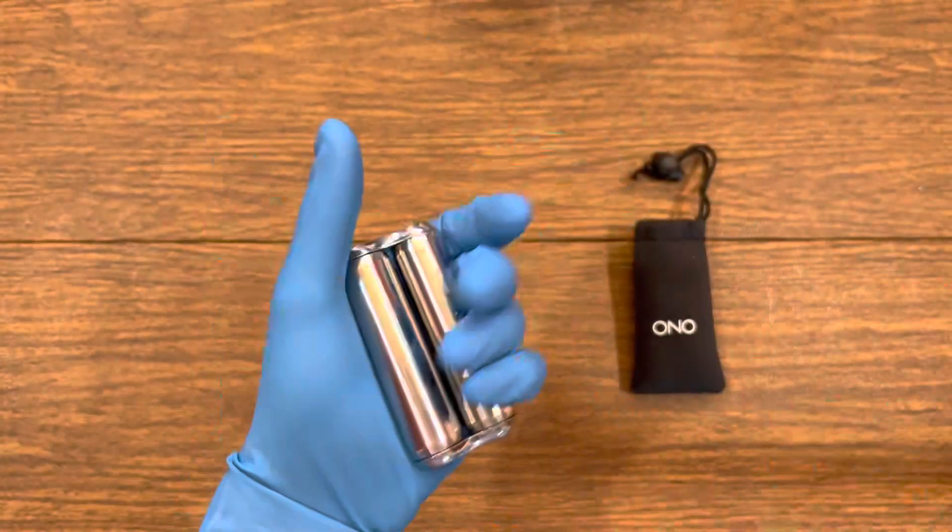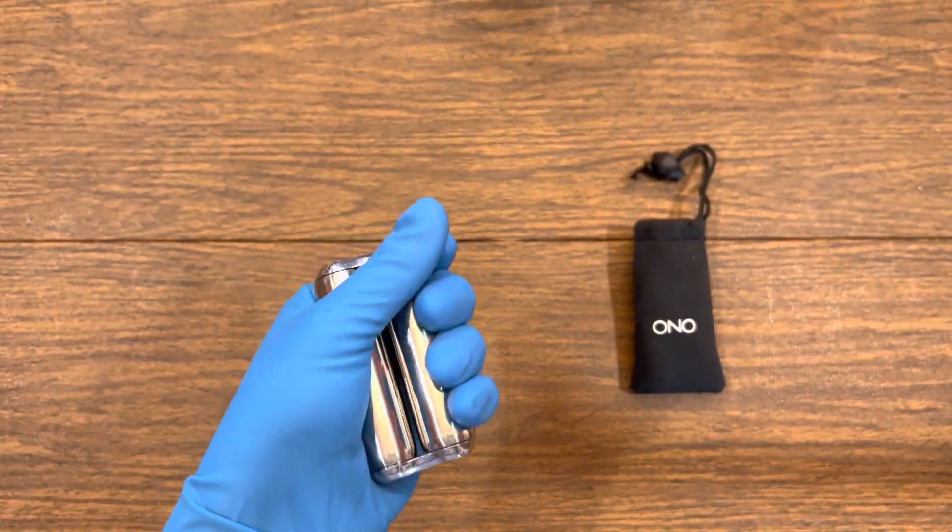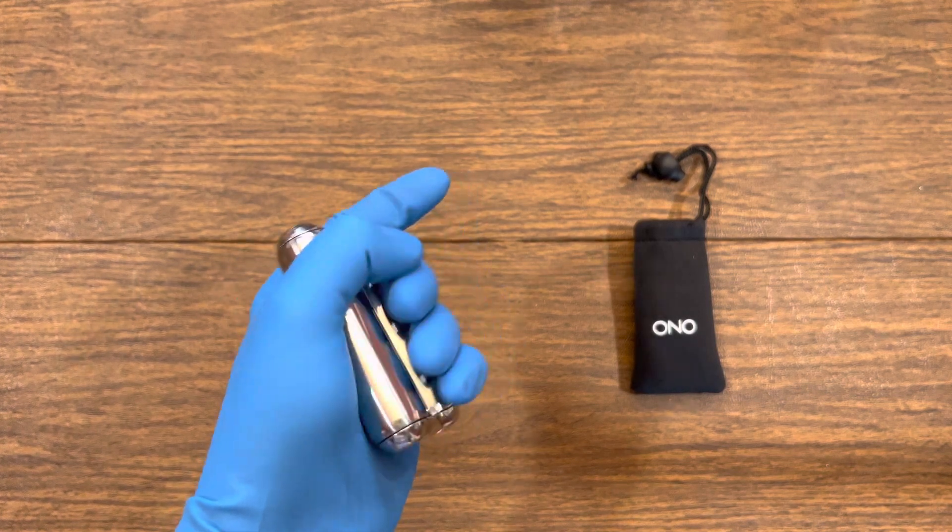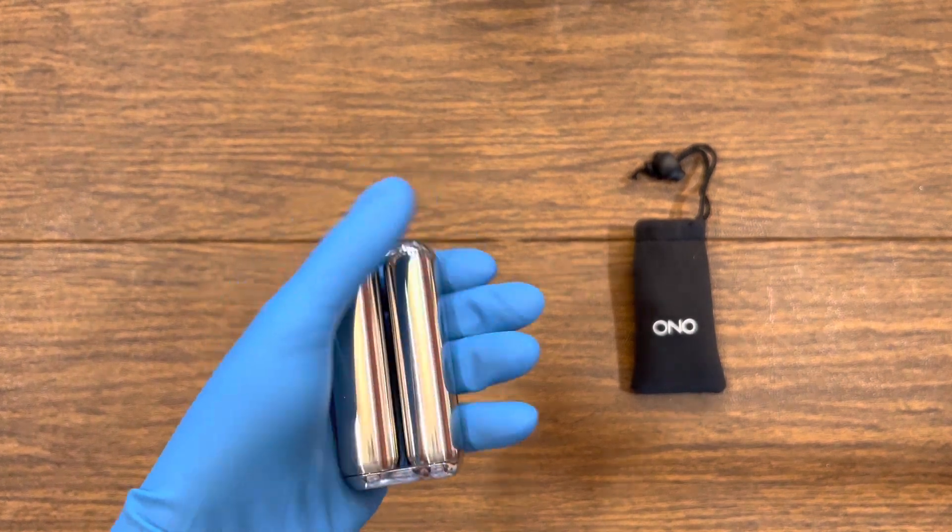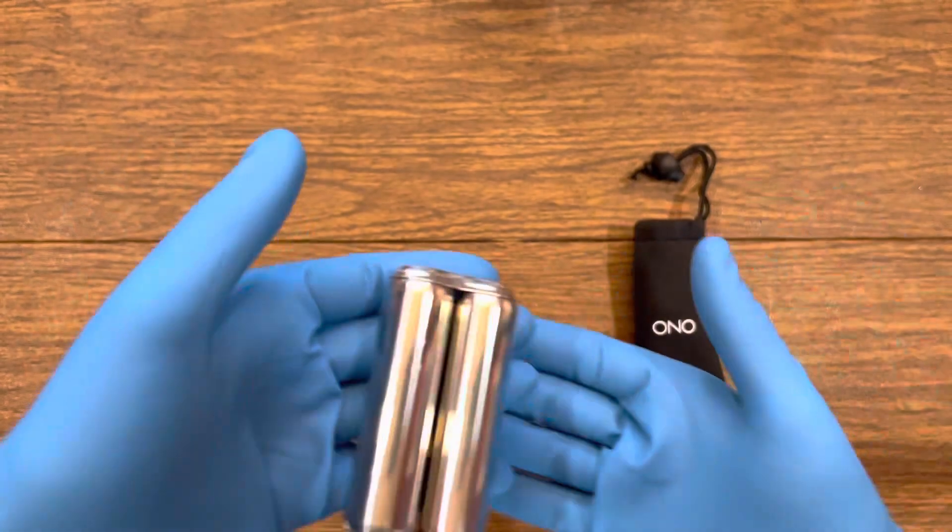I is for interactability. You can roll the Ono in a variety of ways to satiate your fidget needs. You gotta roll with it and the punches.